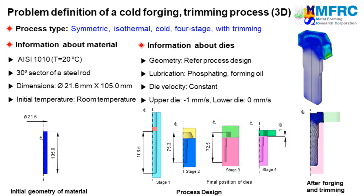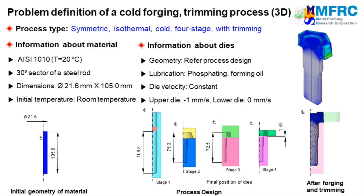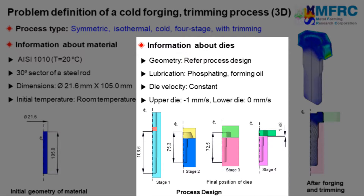The information about the material is given on the left side. The dimensions of the workpiece are as shown in the figure on the left. The material of the workpiece is a steel grade and its initial temperature is that of room temperature. The final configurations of each stage of the dies are as shown in the picture. The dimensions indicated denote the distances between the control points at the final stroke of individual stages. Forming oil is used as a lubricant in this forging process.